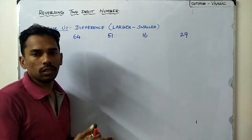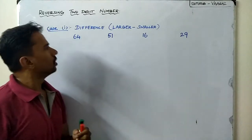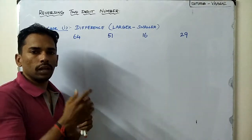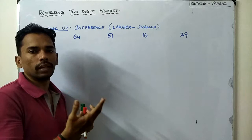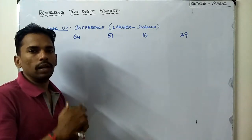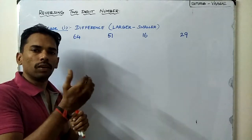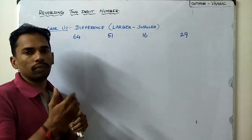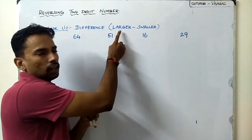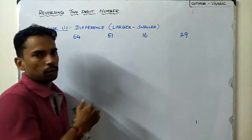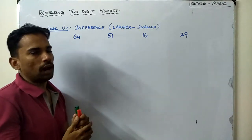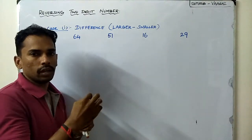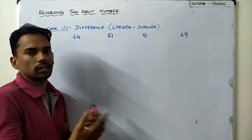We will now look at the first case: finding the difference. We take a two-digit number and its reverse, then find the difference between the two numbers — specifically, larger number minus smaller number. Let us try this operation on some examples and see what happens.